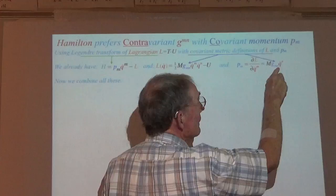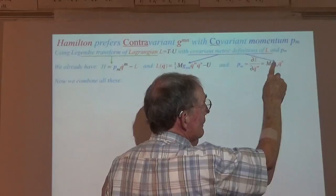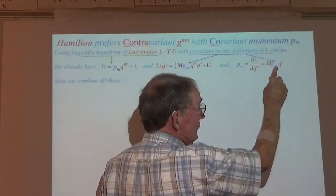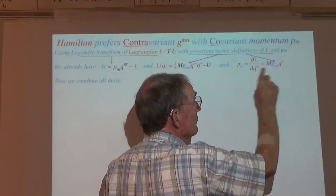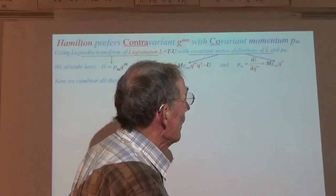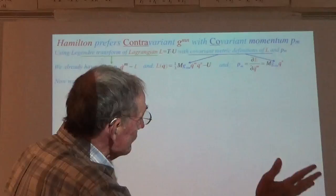One of the jobs of these covariant matrices, or tensors — they're called the metric tensor in general relativity. Here its job is to turn a velocity into a momentum, turn a contravariant thing into a covariant thing. We have an extra coefficient here that you don't really have in the relativistic things. That's all hidden in a truly relativistic theory.